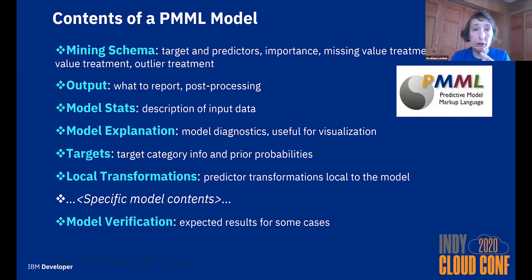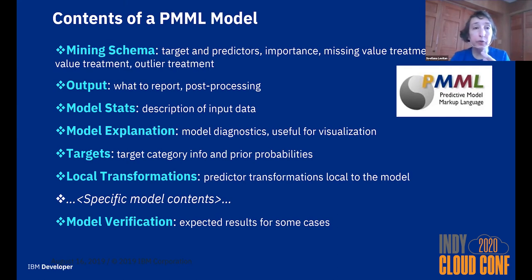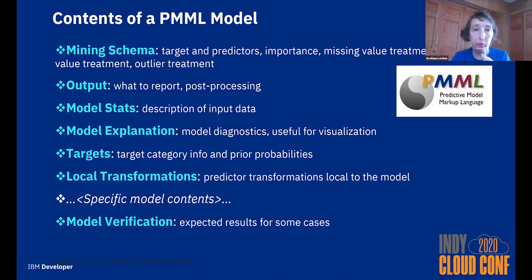Inside each PMML model there is a required MiningSchema element which describes your target, your predictors, and important information such as missing value replacement and outlier treatment. There are also optional elements: the Output element specifies post-processing transformations applied to the model's predictions. ModelStats and ModelExplanation contain information not necessary for scoring but very helpful for model visualization, which is used a lot in SPSS and IBM products.